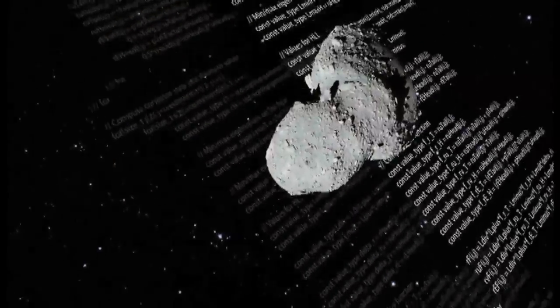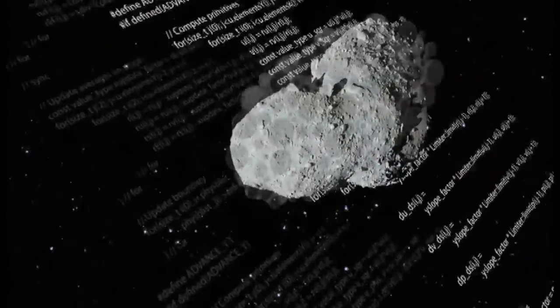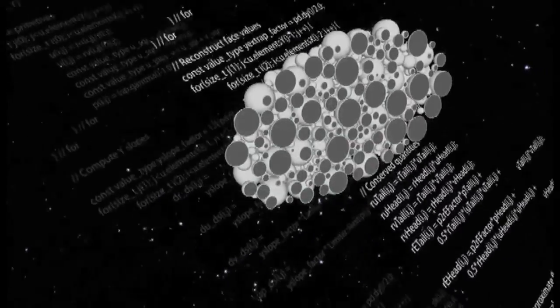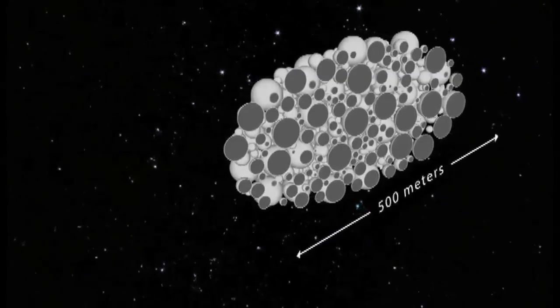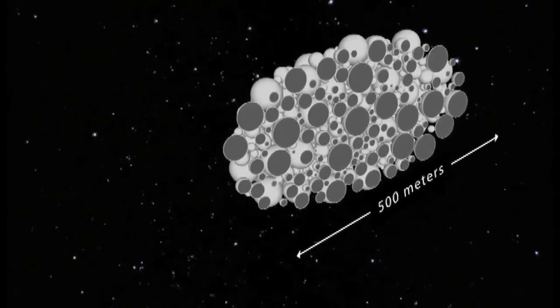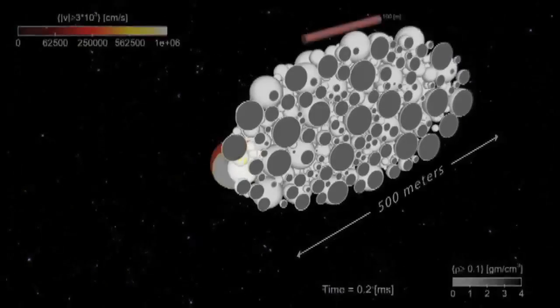This geometry is representative of what we believe the internal structure of an asteroid is. This is actually in the shape of the Itokawa asteroid. These are all granite rocks. The entire size of this asteroid is half a kilometer. It's 500 meters from end to end. It's about 250 meters from side to side.